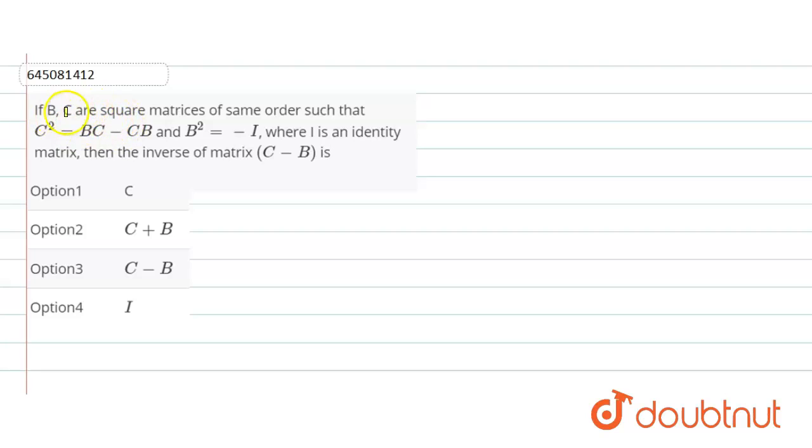Hello everyone, here the question is: if B, C are square matrices of same order such that C squared is equal to BC minus CB and B squared is equal to minus I, where I is an identity matrix, then the inverse of matrix C minus B is. Here these are the four options provided and we have to choose one correct option from this.